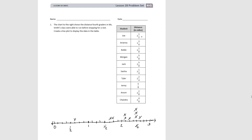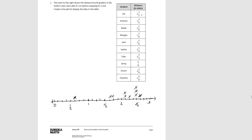We can tell several things from looking at this line plot. We can see our lowest number, our highest number, and our most frequent number. Now we're going to answer some questions based on this line plot.